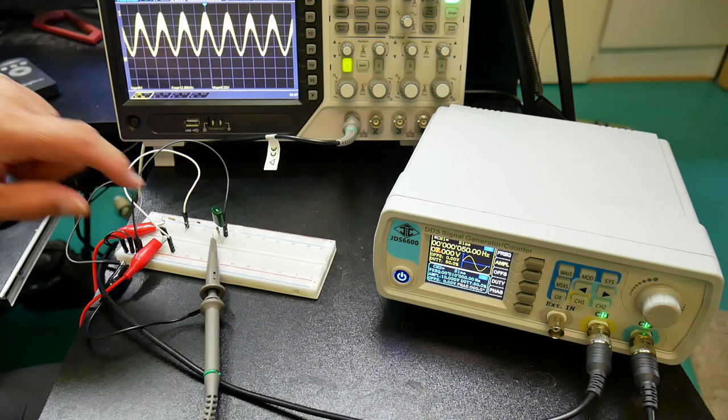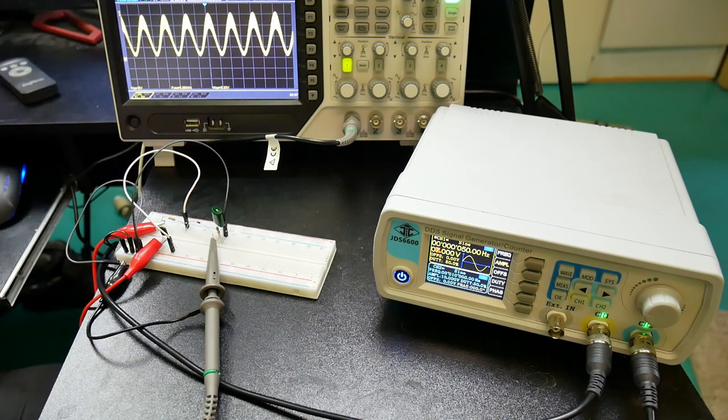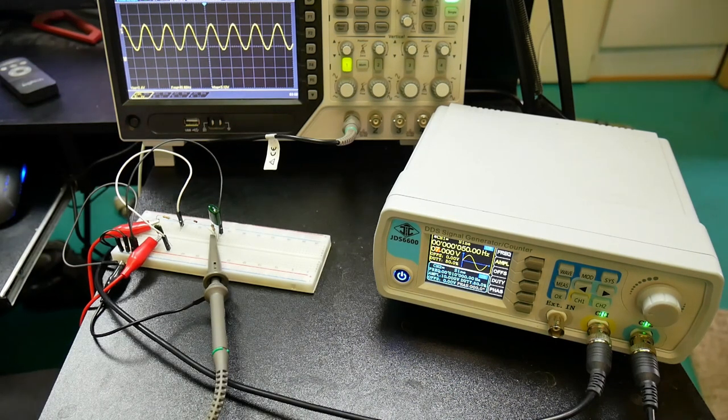So then we're going to use a simple capacitor resistor combination to filter out the carrier frequency. So let's have a look and see what happens when we connect that.